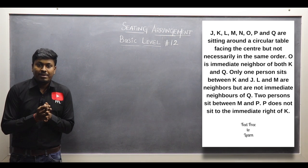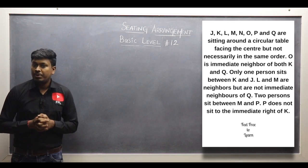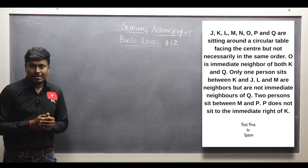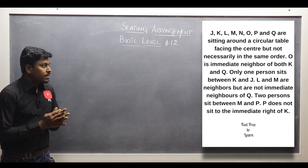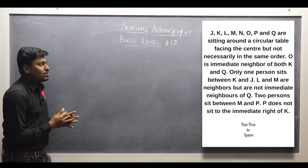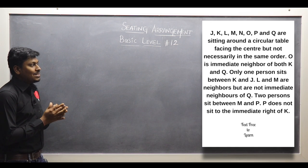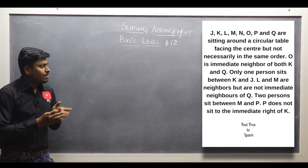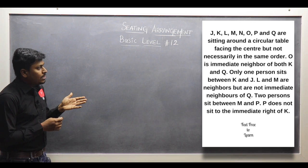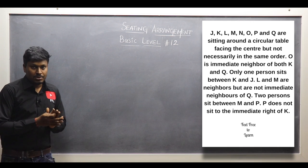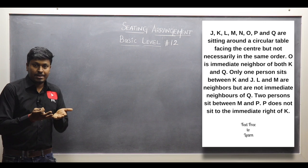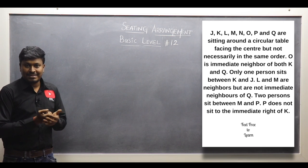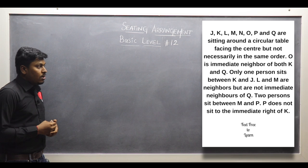Thanks for being here on my YouTube channel. Let me move on to basic level arrangement number 12. J to Q are sitting around a circular table and all persons are facing the center. So totally 8 persons are sitting in a circle and they are all facing the center.